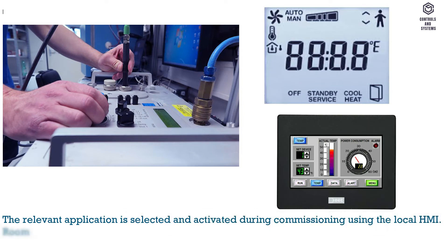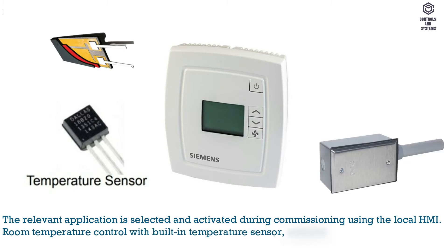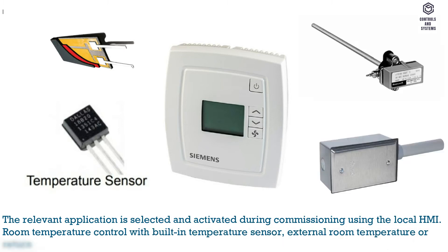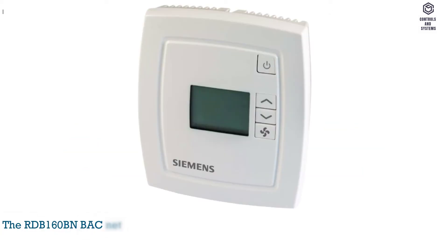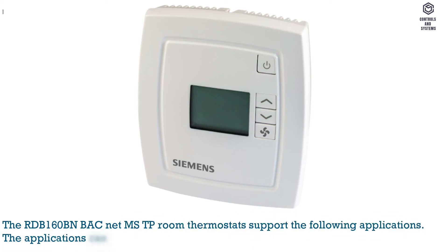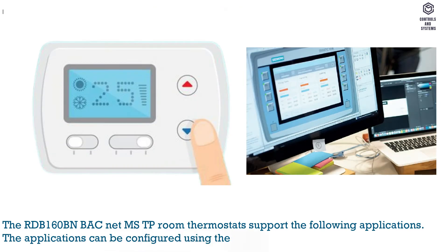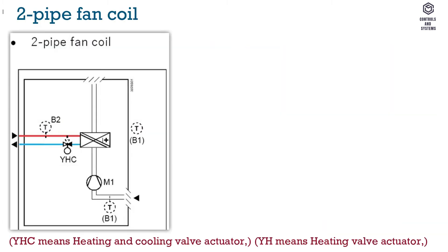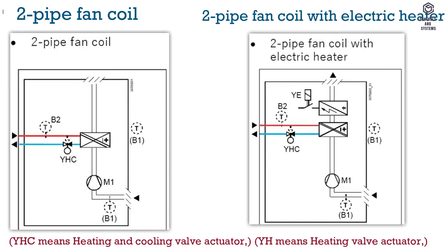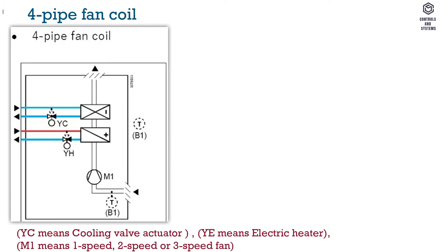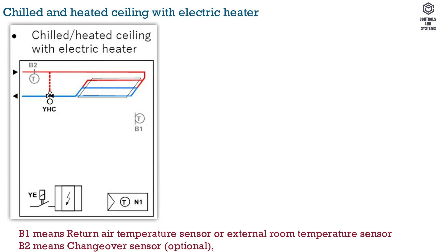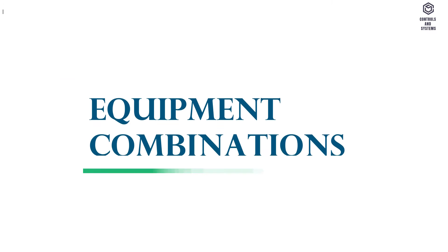Using the local HMI, room temperature control is provided with a built-in temperature sensor, external room temperature, or return air temperature sensor applications. The RDB 160BN BACnet MS/TP room thermostats support the following applications, which can be configured using local parameter settings or via the system: two-pipe fan coil, two-pipe fan coil with electric heater, four-pipe fan coil, chilled and heated ceiling, chilled and heated ceiling with electric heater, and chilled ceiling with radiator.